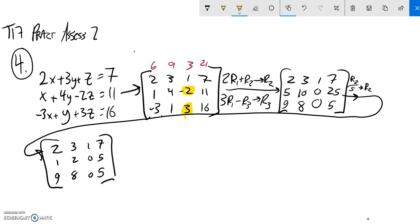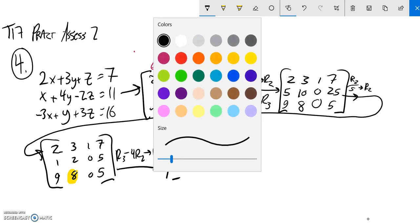But what I can do now is I can use this 2 to make this 8 a 0. And I'll do that by—I think I'm going to go row 3 minus 4 times row 2, because again, I think that will minimize negative numbers for me.